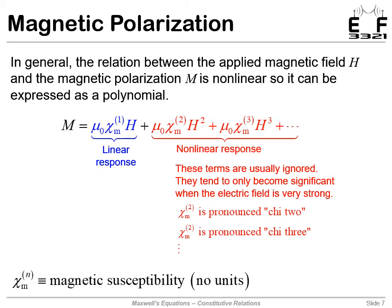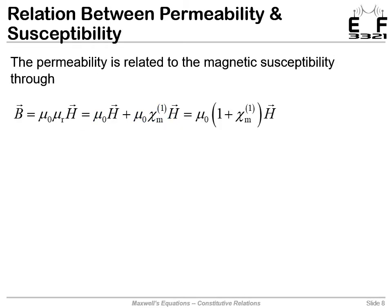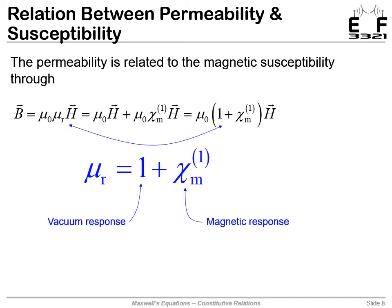There are multiple magnetic susceptibilities as well, with lots of cool behavior, but unfortunately in this class we will focus on just the linear response of materials. Like before, we can write our constitutive relation in terms of the permeability or in terms of the magnetic susceptibility, and comparing the two we see that the relative permeability is (1 + chi_m) — where the one is the vacuum response and the chi term is the magnetic response due to having matter.